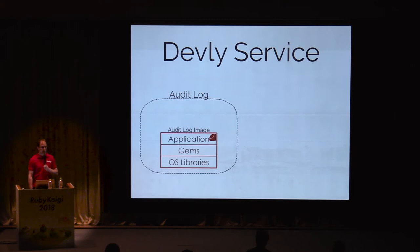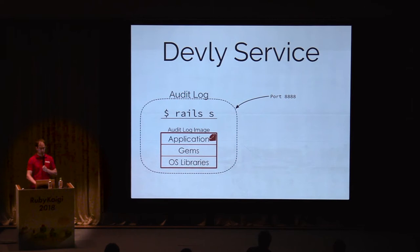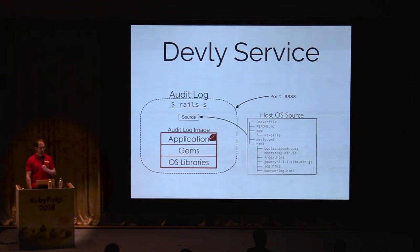A Devly service is a runtime configuration for an image. Here we've created the audit log service using the audit log image. A service runs a command. Since the audit log service provides an API for managing event data, it runs a Rails server to provide the HTTP interface for events. Our audit log needs to be accessible to other services so they can read and write events, so we expose port 8888. If you use a framework like Rails that supports live development, you can mount your repository on top of the files in the image. This allows you to work in your favorite editor from your favorite OS and see changes in your browser.